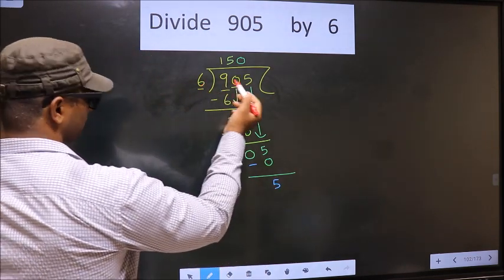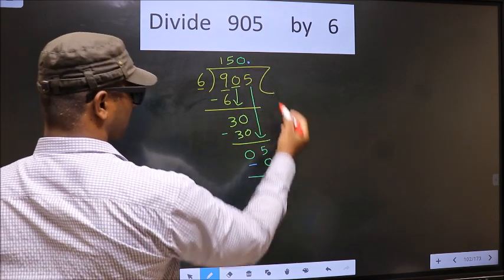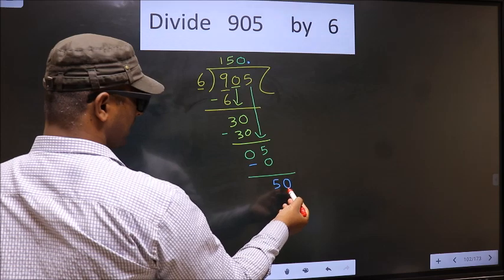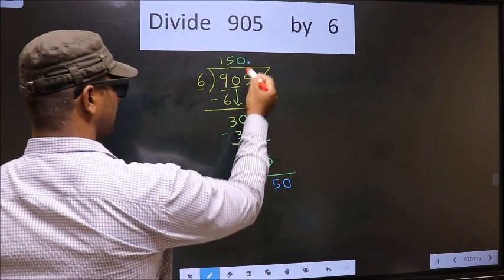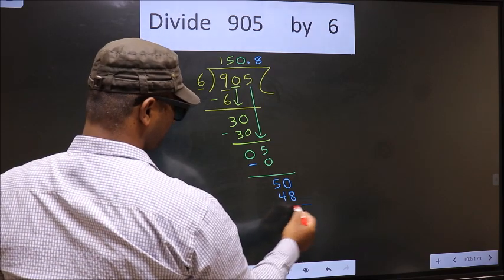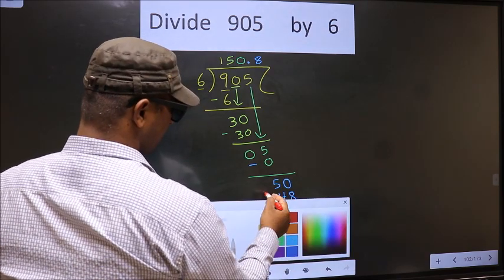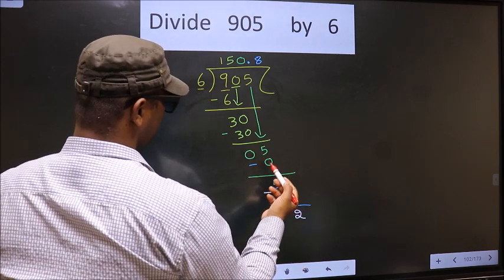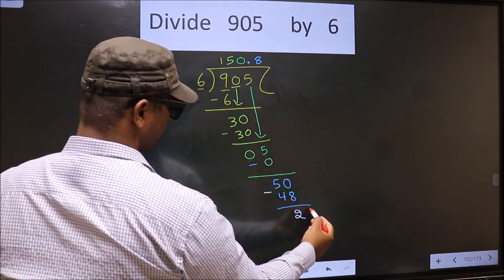So now you can put a dot and take 0 here. So 50, a number close to 50 in the 6 table is 6 times 8 equals 48. Now subtract 50 minus 48 is 2. 2 is smaller than 6. We already have decimal, so you directly take 0 and continue the division.